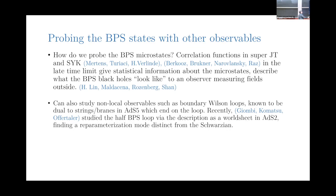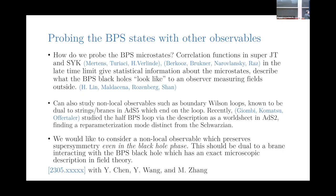In addition to local operator insertions, we could also study non-local observables, such as the boundary Wilson loop discussed in the context of confinement. These boundary Wilson loops are known to be dual to strings and branes in AdS5, which extend from the bulk out and hit the boundary along the location of the loop. Some recent work studied the half-BPS Wilson loop via a description of a string worldsheet sitting in an AdS2 slice of AdS5 — they found some reparameterization mode and hints of chaos. But this physics, even though it has some features of the black hole, doesn't directly describe the black holes we want to study.